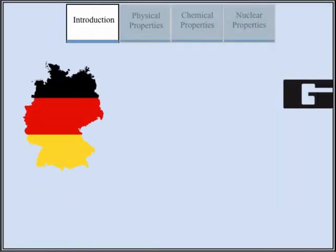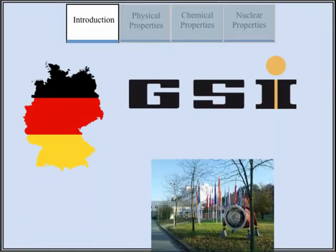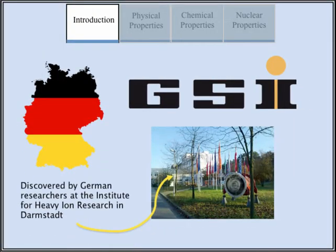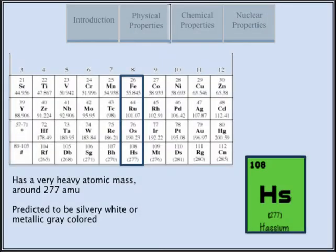Hasium is an artificially produced element that was officially discovered by German researchers in 1984. Because hasium is not a naturally occurring element and it has a short half-life of 9.7 seconds, much of its properties are merely predictions.